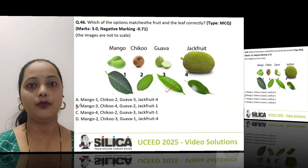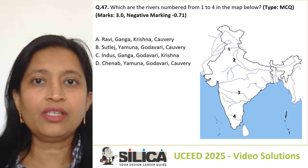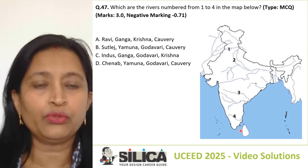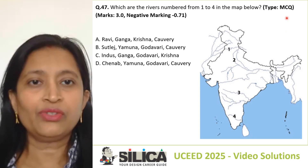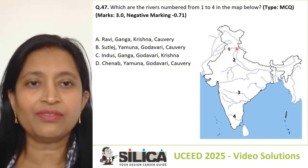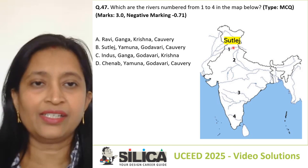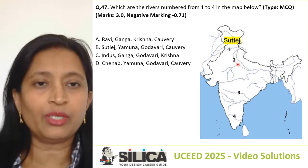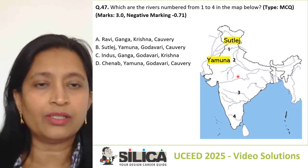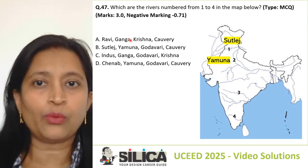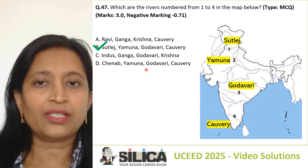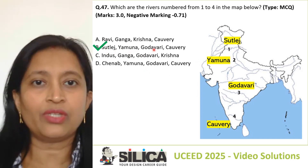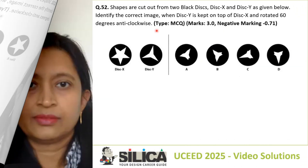Question number 47: which are the rivers numbered one to four in the map below? This is a GK question requiring geography knowledge. River 1 is Satlaj — these are the rivers of Punjab. River 2 is Yamuna — we can identify Ganga and Yamuna here, and this one is Yamuna, so we discard options A and C. River 3 is Godavari and river 4 is Kaveri. The correct answer is B, as it correctly lists Satlaj, Yamuna, Godavari, and Kaveri.